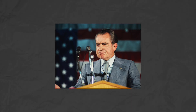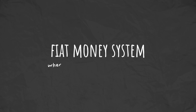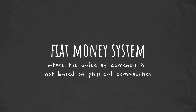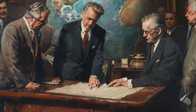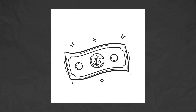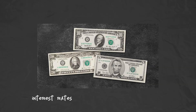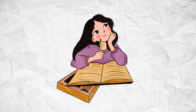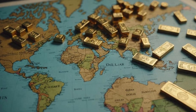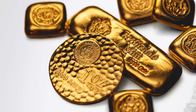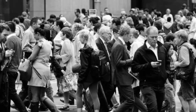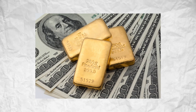Since then, most countries have adopted fiat money systems, where the value of currency is not based on physical commodities, but rather on trust in the government issuing the money. This allows for greater flexibility in monetary policy, enabling governments to better manage their economies through tools like interest rates and money supply adjustments. Understanding the history of the gold standard helps us appreciate how our current financial systems evolved, and highlights the balance between stability and flexibility that is crucial for economic health. While we no longer carry gold coins or back our money with gold, the legacy of the gold standard continues to influence how we think about money and value today.